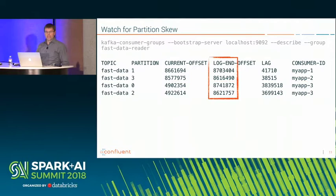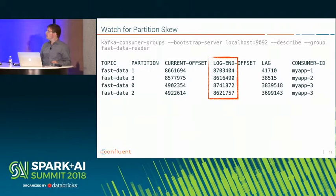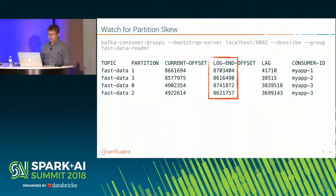The other thing to look at is your log end offset. You also want to make sure the amount of data going into every partition is roughly the same. If that's not the case, even with the best consumer-partition allocation, you won't have a predictable load on each worker. Make sure what you're writing into those topics is roughly evenly balanced. In this case, the amounts are roughly the same, so we don't have a problem on that front.